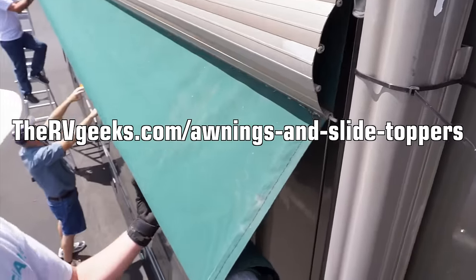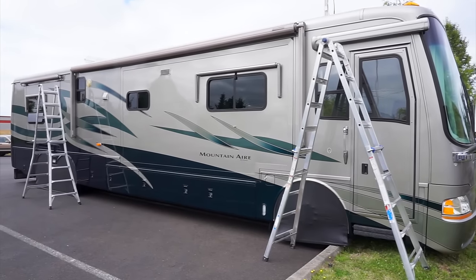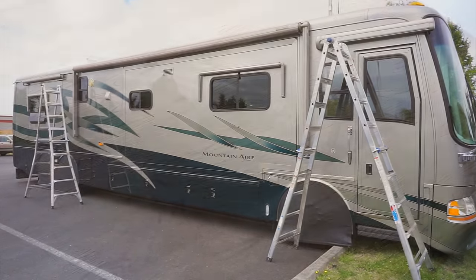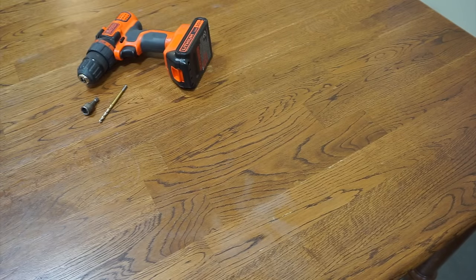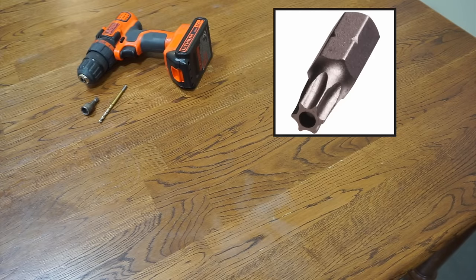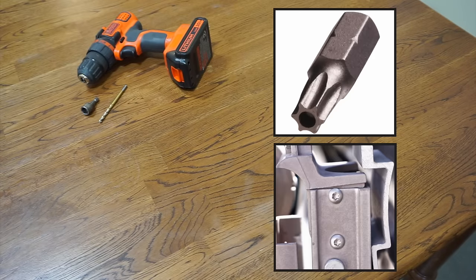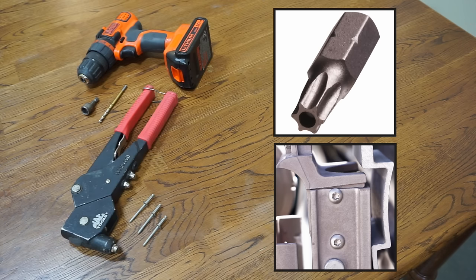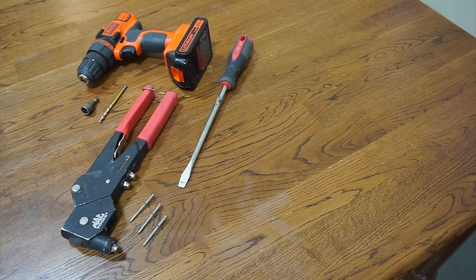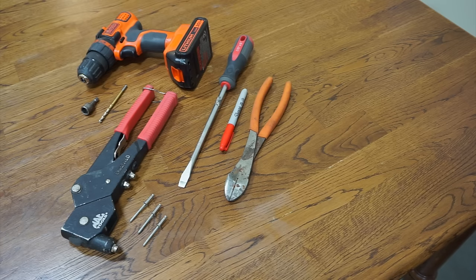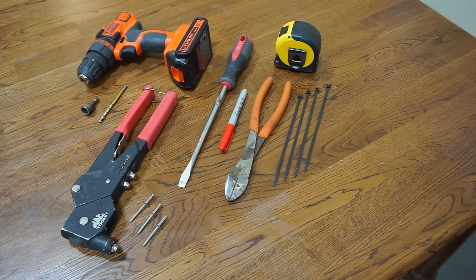Here are the tools we'll be using today. Of course we'll need a couple of sturdy stepladders, a cordless drill with an assortment of bits including the correct size Torx bit for the side screws on the awning arms, a pop rivet gun and rivets, a flat blade screwdriver, felt tip marker, a heavy duty wire cutter, and a tape measure.